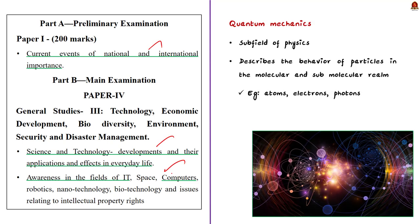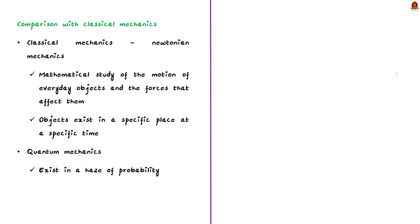First of all, let us go through the basics. What is quantum mechanics? Quantum mechanics is a subfield of physics that describes the behavior of particles such as atoms, electrons, photons and almost everything in the molecular and submolecular realm. It was developed during the first half of the 20th century.